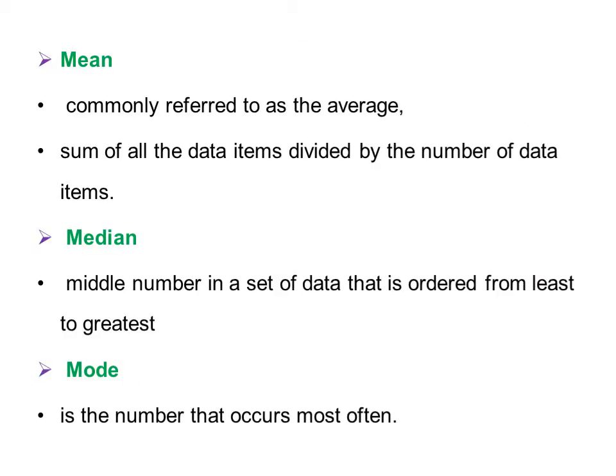What is the mean? Commonly referred to as the average, it is the sum of all the data items divided by the number of data items. What is median? Median is the middle number in a set of data that is ordered from least to greatest, or from greatest to least — that is, ascending or descending order.